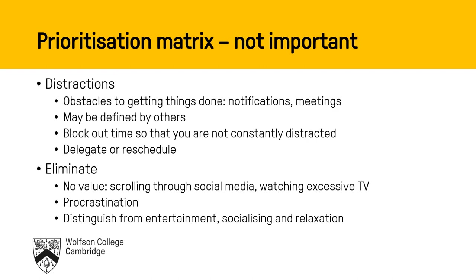Now the bottom row — the unimportant things. First, things that appear urgent: notifications popping up on your phone, distracting you from the work you're doing. These might be things put on you by others or collective responsibilities you can delegate. It's not quite like Eisenhower — you haven't got a huge staff — but if you're in a shared house and doing a lot of the housework or cooking, you might be able to share those tasks. Or you could block out time so you're not always distracted, like only checking your email at the start and end of the morning.